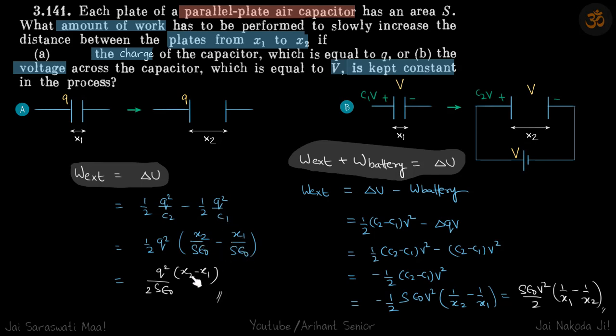Second case: work external equals ΔU minus work done by the battery. So ΔU we will write in the form of ½CV² because V is given in this problem. In this part B, the first part they had given the charge q, so we were getting the values in terms of q.